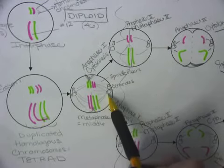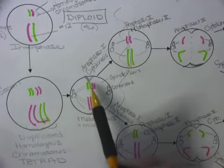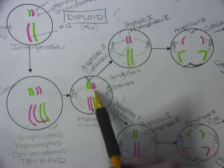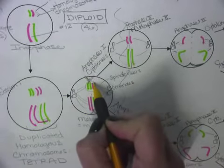If these spindle fibers here were really strong and these were a bit more weak, what could happen is instead of just pulling these two chromosomes over to the right, what if we grabbed all of them?